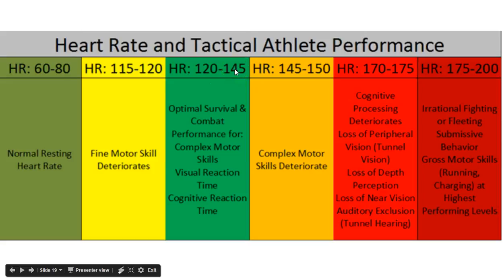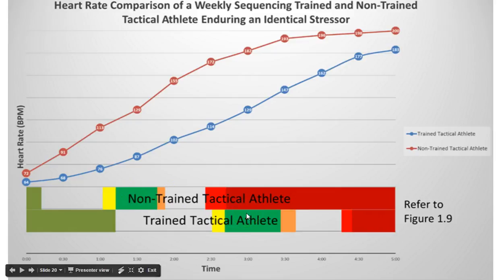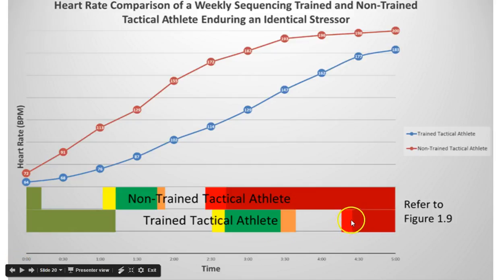This comes from the Triphasic Tactical Manual. An athlete in the green heart rate zone is much better at decision-making versus one not breathing correctly whose heart rate runs higher. The blue line represents a trained athlete. In the same situation, an untrained athlete's heart rate goes up faster, moving through these zones at a much higher rate. With the right breathing pattern and training, the athlete at the bottom is far more effective at decision-making and motor skills.